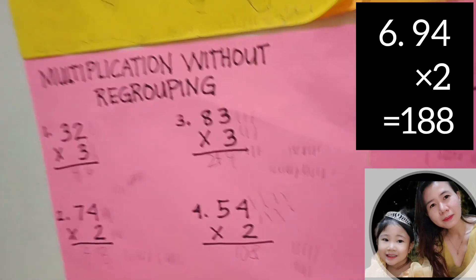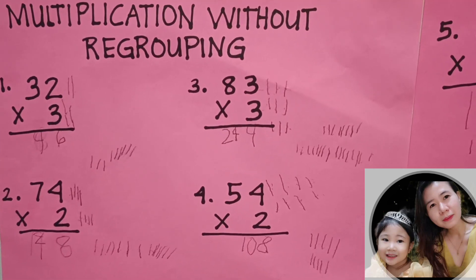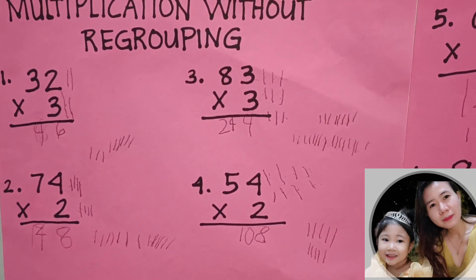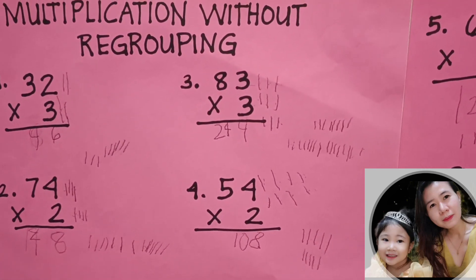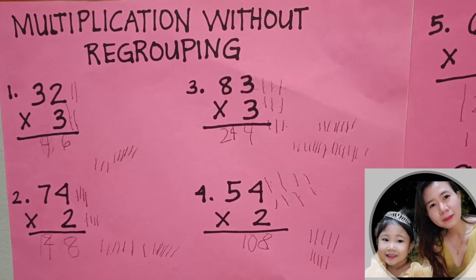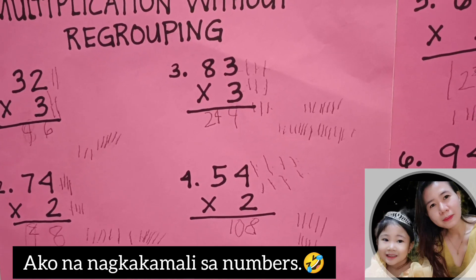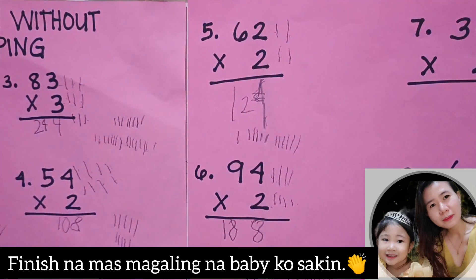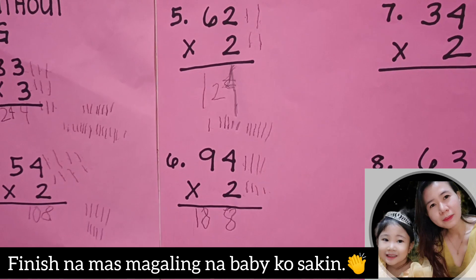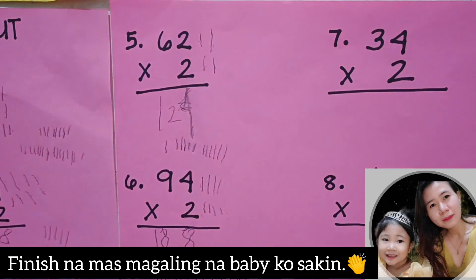I will check your answer. Number 1: 32 times 3 equals 96. Number 2: 74 times 2 equals 148. Number 3: 83 times 3 equals 249. Number 4: 54 times 2 equals 128. Number 5: 62 times 2 equals 124. Number 6: 94 times 2 equals 188. Very, very good.